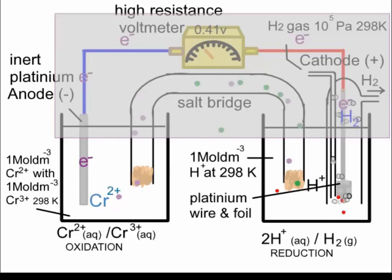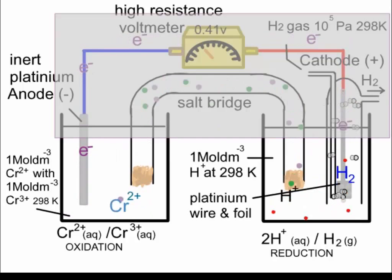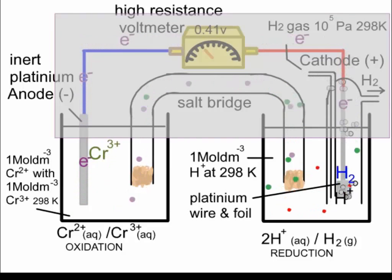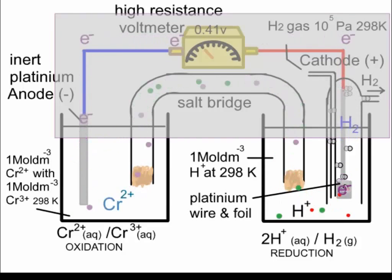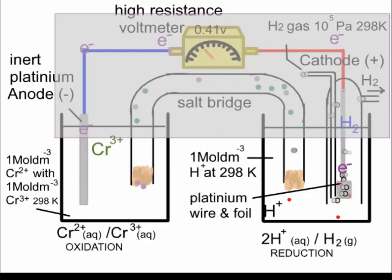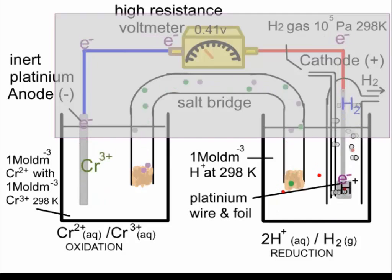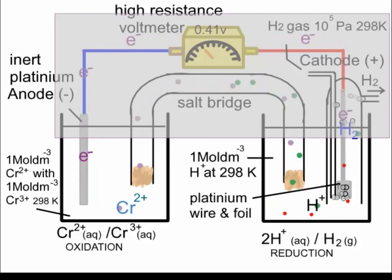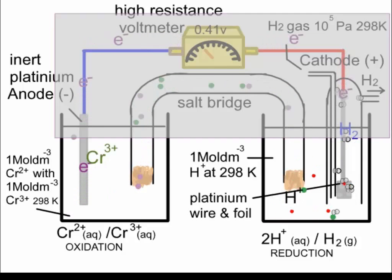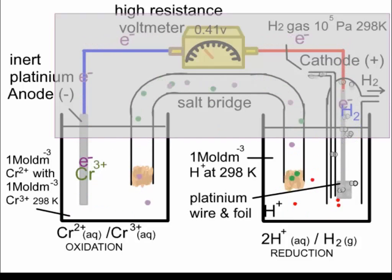Next, let's consider the role of the salt bridge. The salt bridge will contain a simple salt solution such as sodium nitrate or potassium chloride. Without a salt bridge, a galvanic cell will run for only a short time. The role of the salt bridge is to counterbalance an imbalance in charge that begins to build up in both of the half cells.